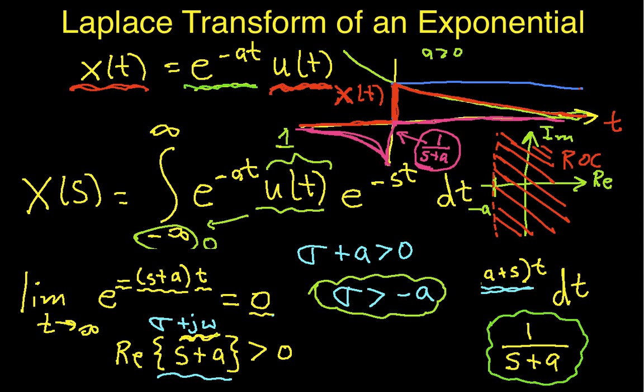So, again, most of the time we're dealing with signals that are 0 for values of t less than 0, so we don't really have to worry about the difference between the unilateral and bilateral Laplace transform. So, this concludes this example.